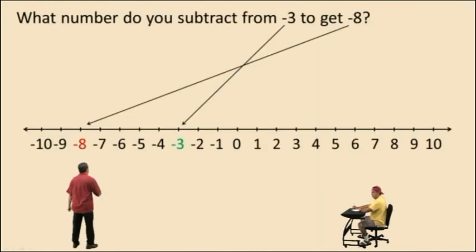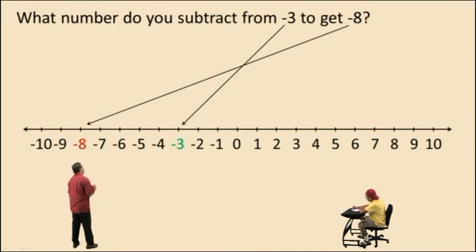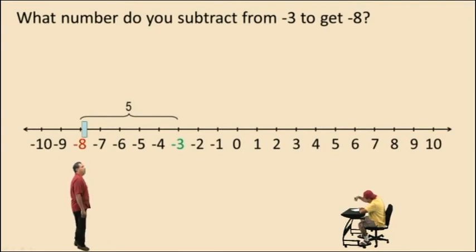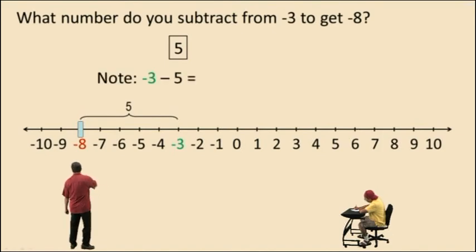Okay, let's do one more of these. What number do you subtract from negative 3 to get negative 8? Well, if we start at negative 3 and we move 5 units to the left, we see we arrive at negative 8 on the number line. Therefore, what number do you subtract from negative 3 to get negative 8? The answer is positive 5. That makes sense because negative 3 subtract 5 is negative 8.